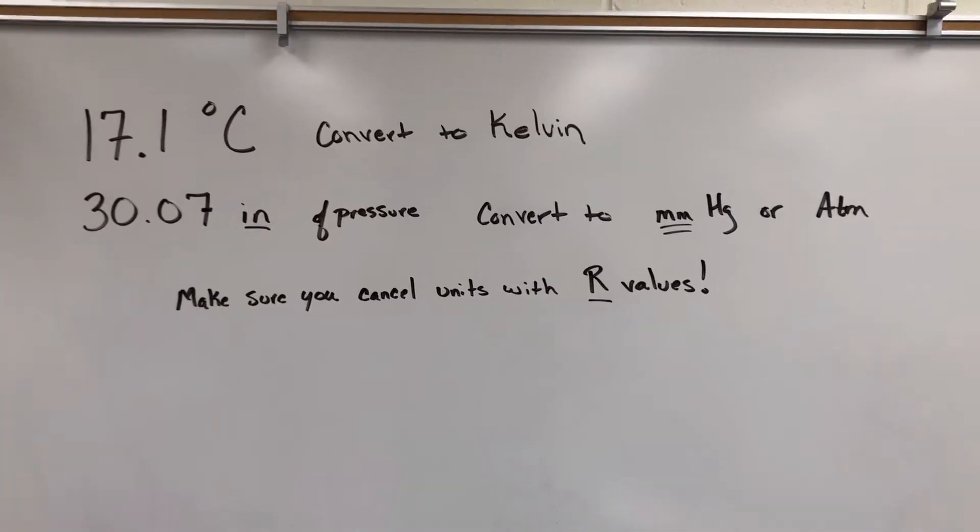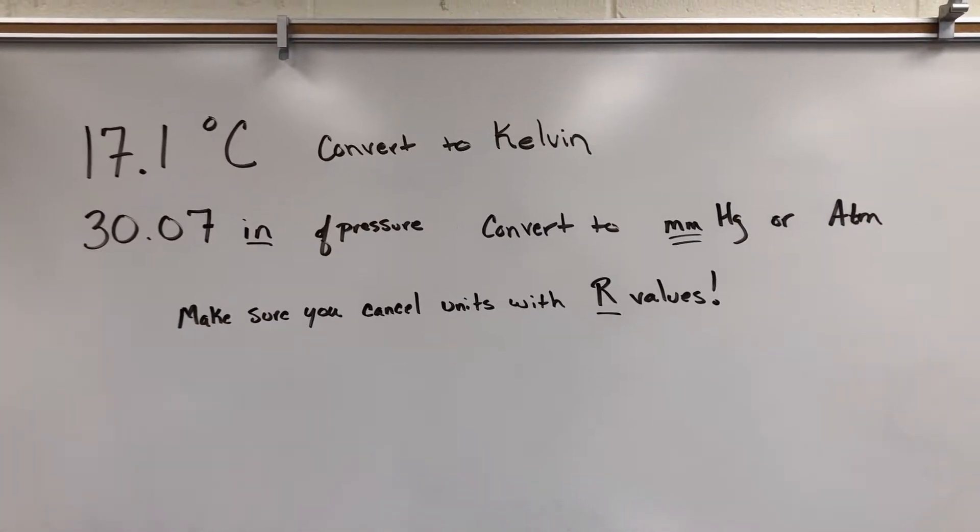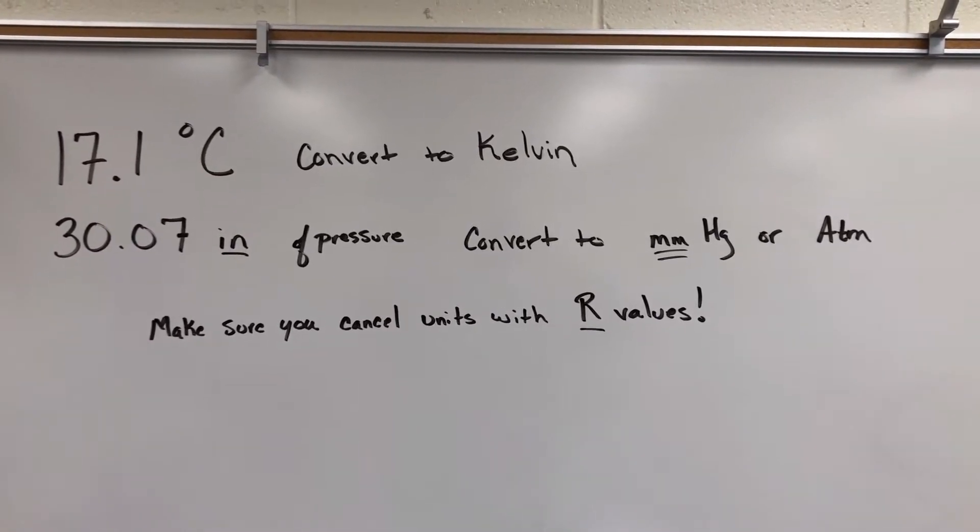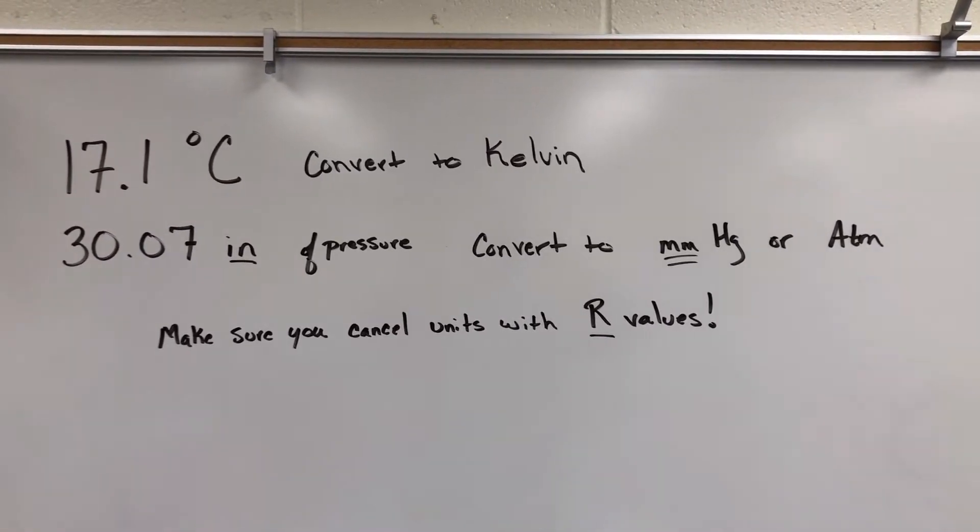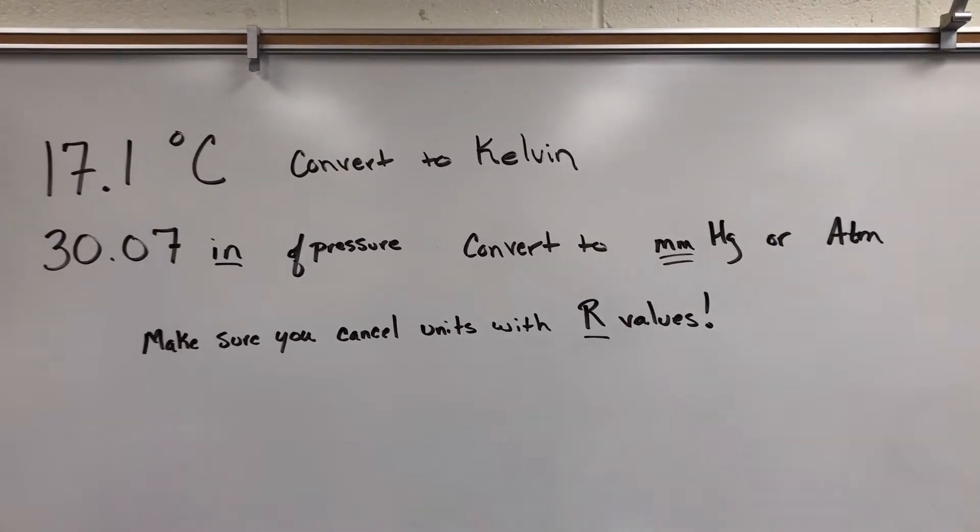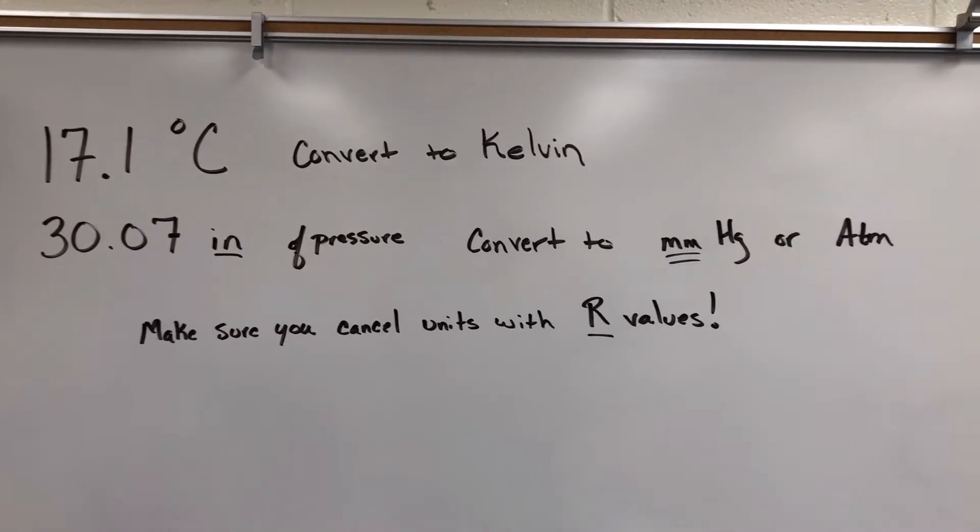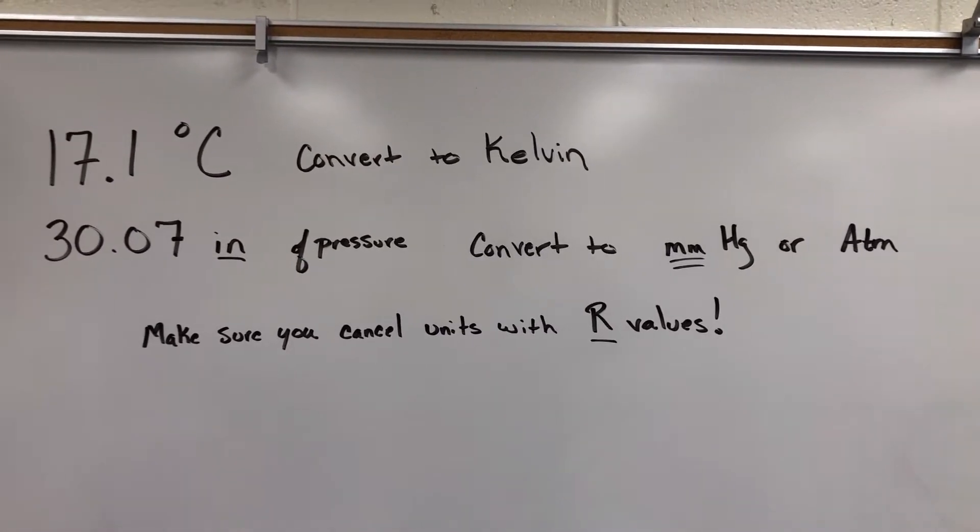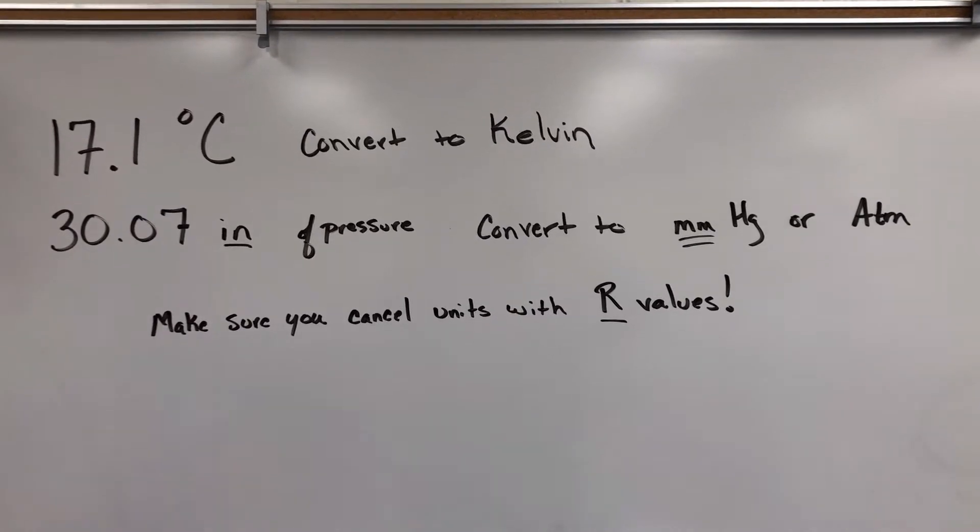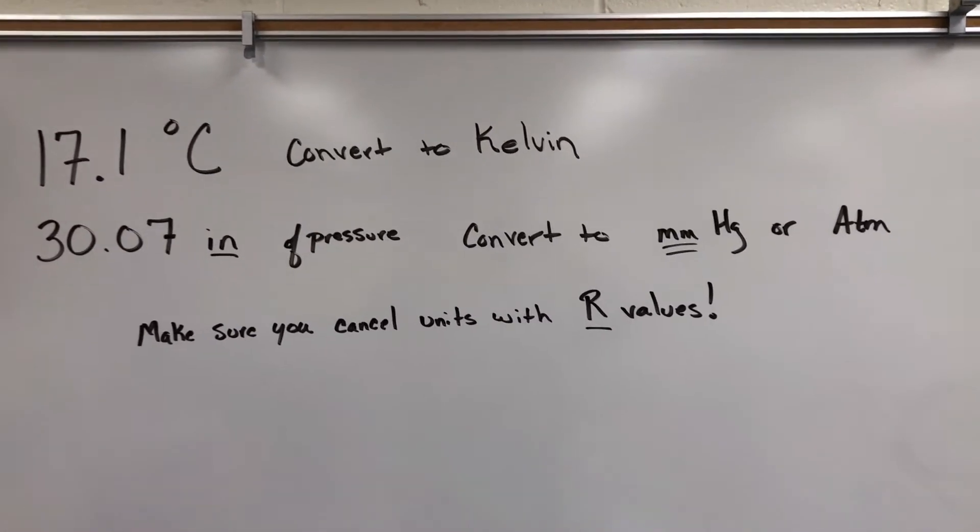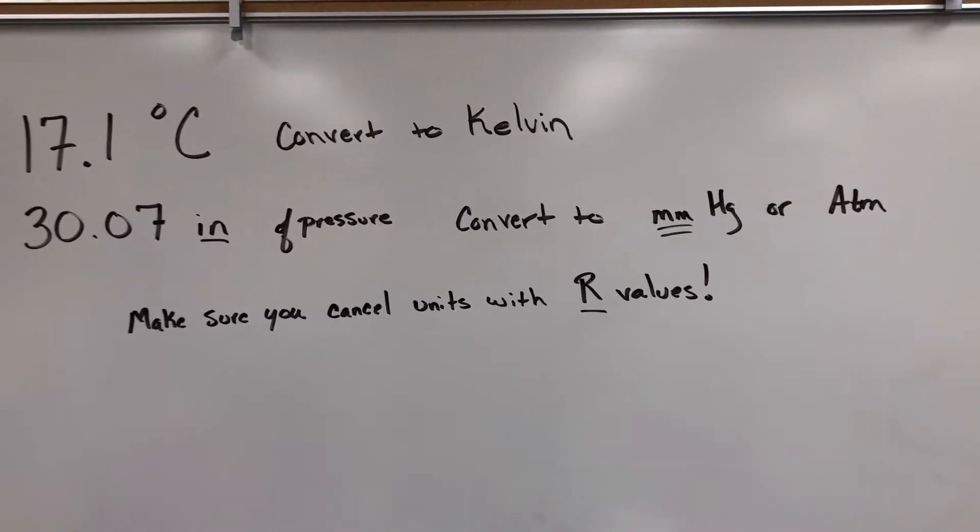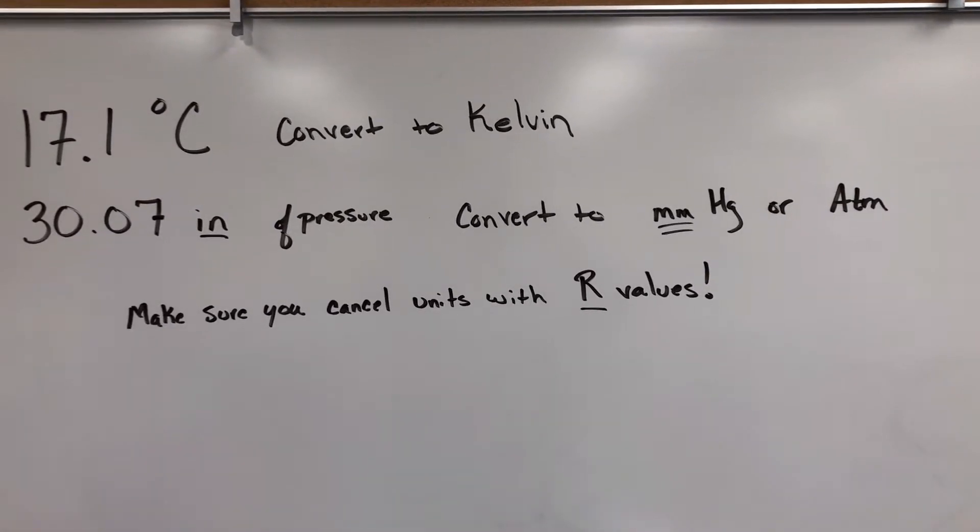Today, the room temperature is 17.1 degrees Celsius. The weather app tells us that in this location on this day the air pressure is 30.07 inches of mercury. You're going to have to convert that to either millimeters of mercury or atmospheres of pressure depending on which R value you are using. Make sure that you cancel the correct units with the correct R value.